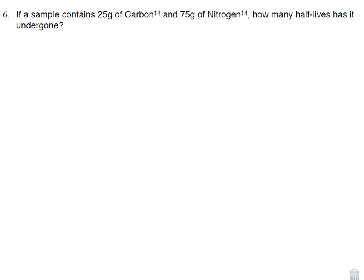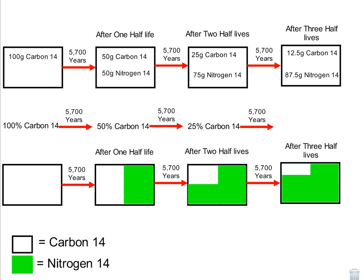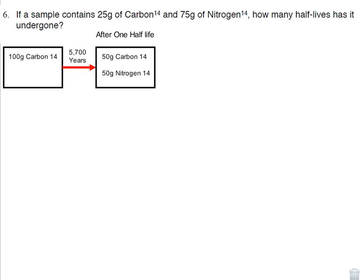Question six on the same worksheet, or fun sheet as you guys probably call them. If a sample contains 25 grams of carbon-14 and 75 grams of nitrogen-14, how many half-lives has it undergone? Well, you might have committed this page to memory, which would be quite impressive or really lame, I can't really decide which one. Then you would do the worksheet that you can kind of go through. After one half-life, I have 50 grams of carbon-14, 50 grams of nitrogen-14. Am I there yet? No. So I go another half-life. I wind up with 25 grams of carbon-14 and 75 grams of nitrogen-14. And I arrived at my answer, and I could see that the answer would be two half-lives have gone by.